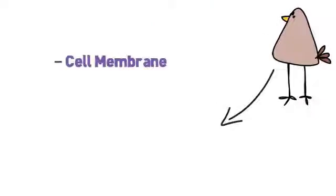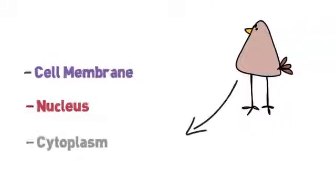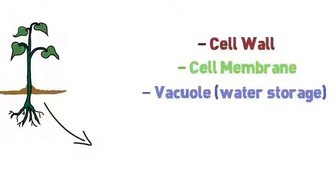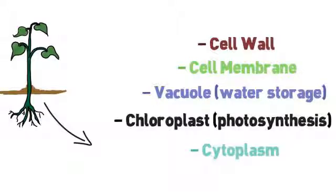Animal cells have cell membrane, nucleus and cytoplasm. Plant cells have a cell wall, cell membrane, vacuole for water storage, chloroplast for photosynthesis, cytoplasm and nucleus.